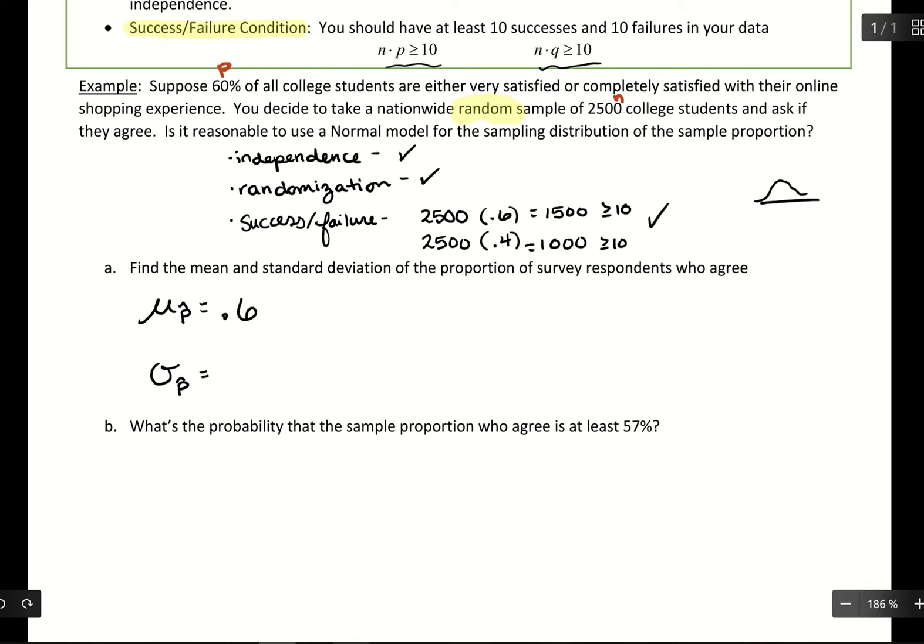Standard deviation, we need to do a little calculation. You're going to take a square root 0.6 times 0.4 over 2,500. And just make sure all of that's underneath the square root when you throw it into your calculator, and that should be 0.0098. So our distribution, if we're looking for this proportion of 2,500 students that are either very satisfied or completely satisfied with their online shopping experience, we expect it to be 60% of those 2,500 students. But on average, that's going to deviate by 0.0098. So this creates a distribution of proportions.